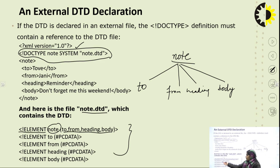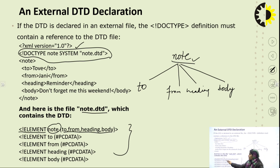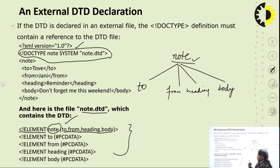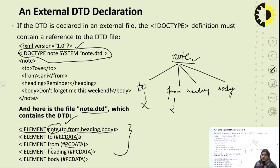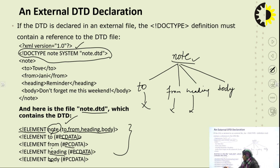As per the external DTD code, the root node is 'node', further divided into four main elements: to, from, heading, and body. The element 'to' is not further divided, so PCDATA is assigned. Similarly, 'from' is not further divided, so PCDATA is assigned. 'Heading' is also not further divided, so PCDATA is assigned. 'Body' is also not further divided, so PCDATA is assigned.